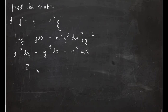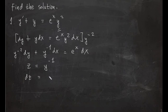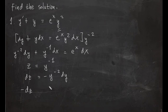Next we apply the substitution: z is equal to y raised to negative 1, which is always the factor y raised to 1 minus n. Taking the differential gives us negative y raised to negative 2 dy. So y raised to negative 2 dy equals negative dz, and y raised to negative 1 becomes z.